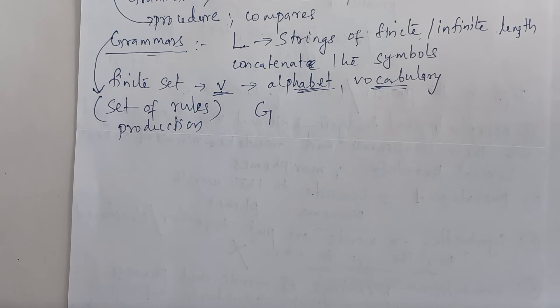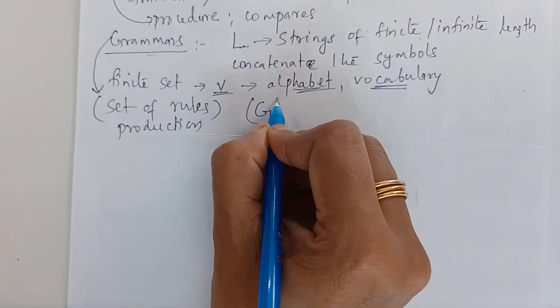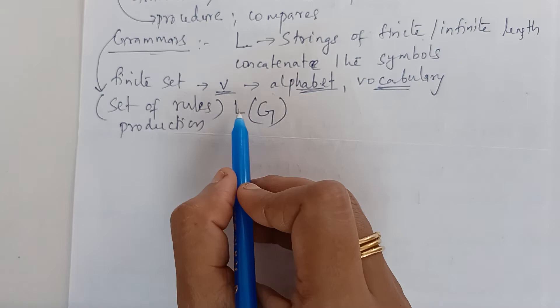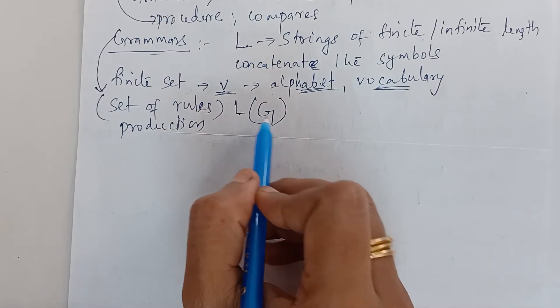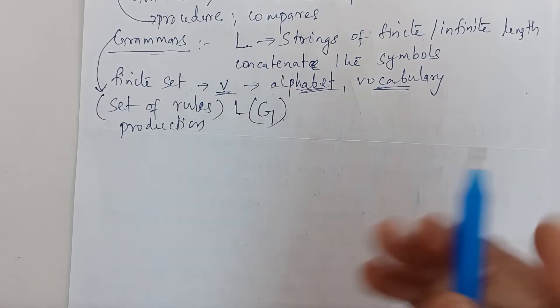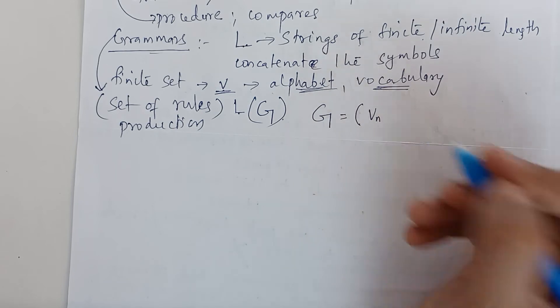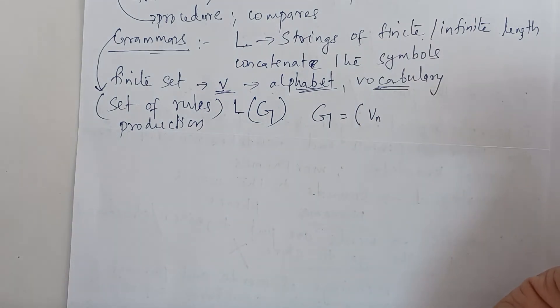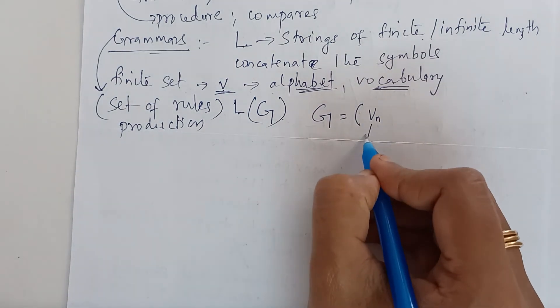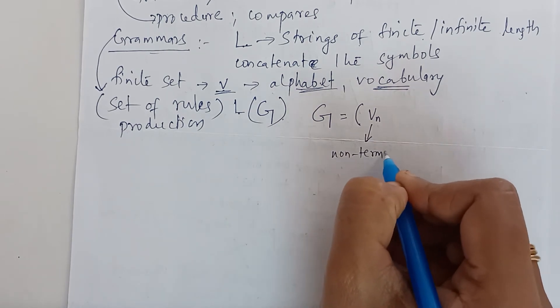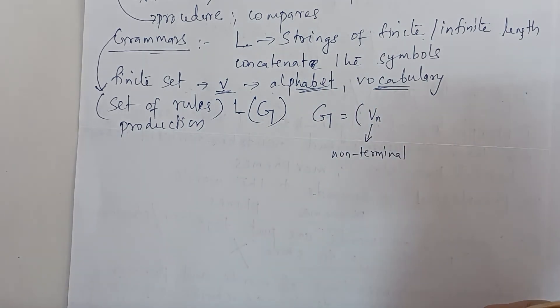Let us represent by the letter capital G. That is a formal specification of sentence structures that are allowable in the language. The language generated by the grammar is represented as L of G. We can define grammar G as V of N, non-terminal symbols.